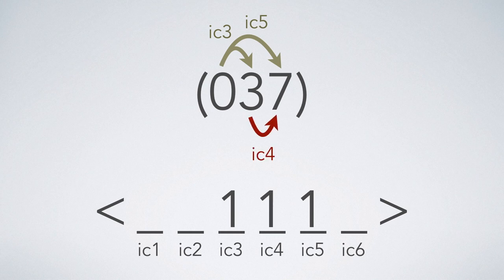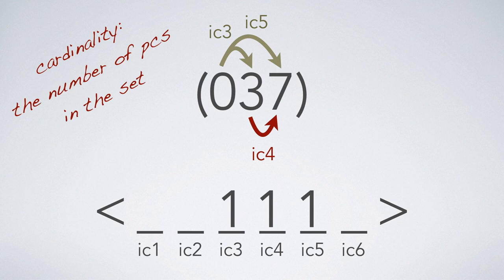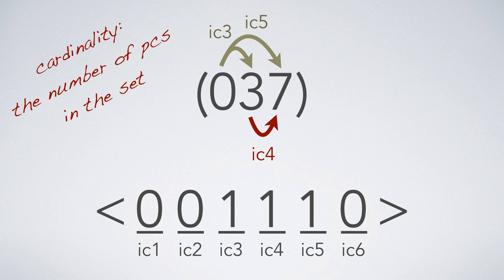But don't forget about this one, the interval class from 3 to 7, which is 4 semitones. Because this set class has such a low cardinality, we've accounted for all the intervallic relationships.